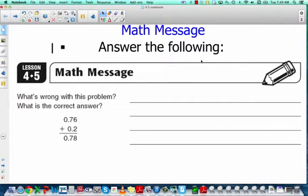Today we're going to talk about addition and subtraction with decimals. And so the question I have in front of you is, what's wrong with this problem? Is the correct answer 78 hundredths, or did this person do the problem wrong?